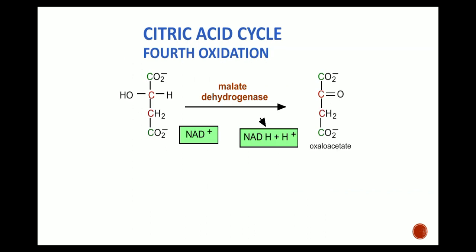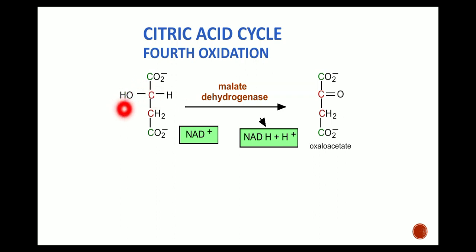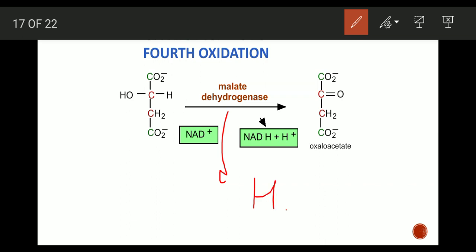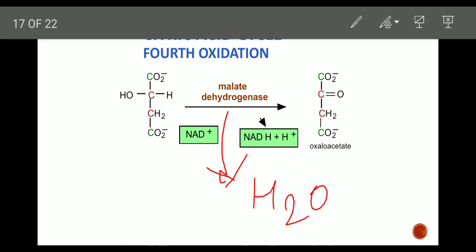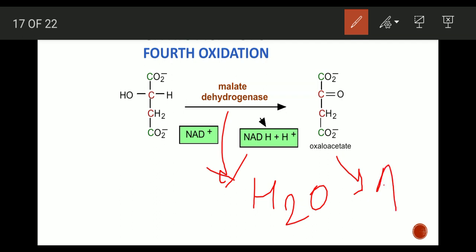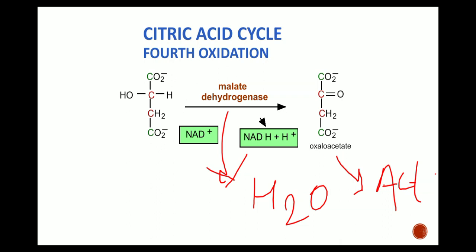In the fourth oxidation step, L-malate is converted into oxaloacetate. NAD+ binds with the liberated hydrogen, forming NADH + H+. The remaining hydrogen molecule binds with a half oxygen molecule to form water. Oxaloacetate is thus formed and again binds with acetyl CoA, repeating the whole cycle. Key point: requires NAD+.